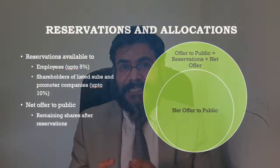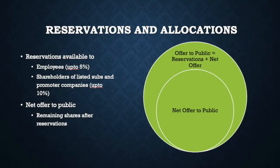It becomes very competitive to actually get shares in an initial public offering. The ICDR allows companies to set aside some amount of shares in reserved categories — reserved for employees, shareholders of listed subsidiaries of the company, as well as promoter companies.